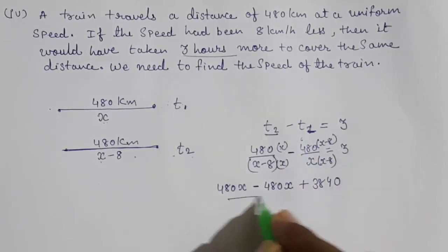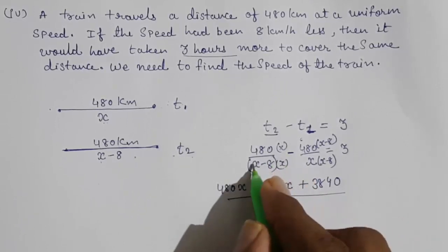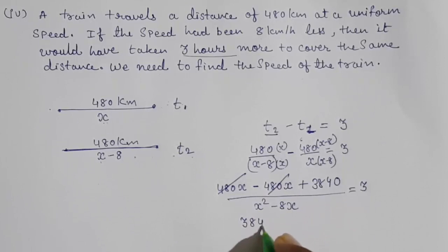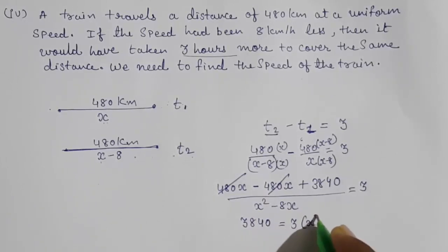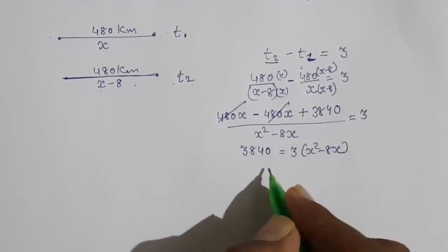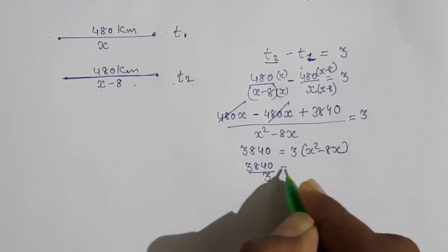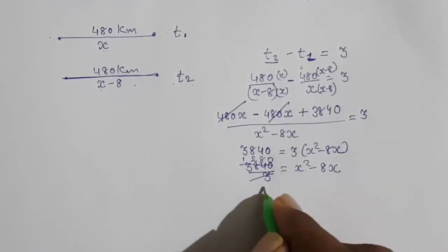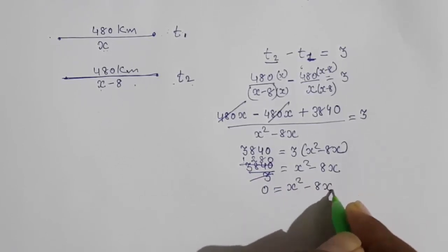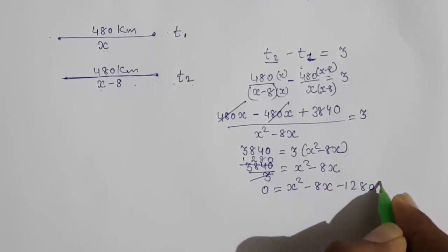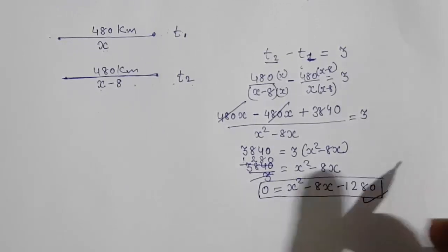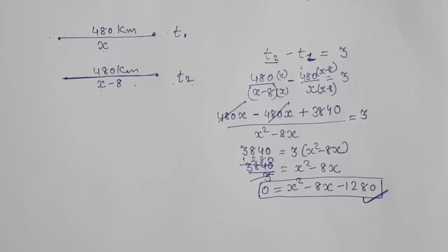Simplifying the numerator: 480x − 480x + 3840 = 3840. So 3840 = 3 × x(x − 8), which gives 3840 = 3(x² − 8x). Dividing both sides by 3: 1280 = x² − 8x, so x² − 8x − 1280 = 0. This is the quadratic equation for Question 4. Thank you for watching — please subscribe so I can bring more such videos.